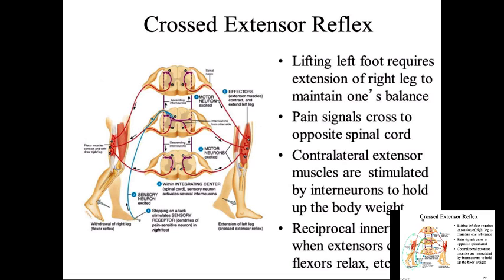The crossed extensor reflex maintains balance when one foot is pulled away. When the right foot flexes away from a tack, information crosses over — it's excitatory to the quads on the opposite side — so the left leg extends. One leg extends while the other flexes, maintaining balance.